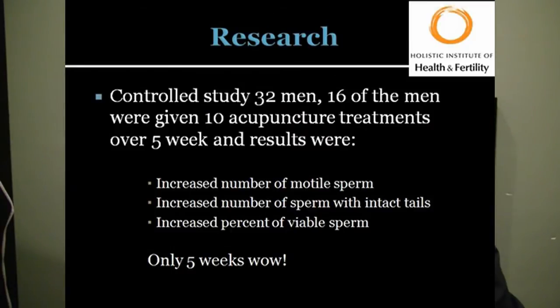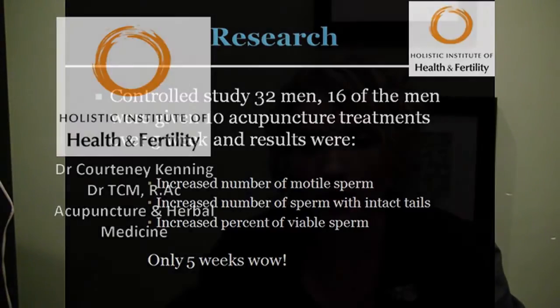There's lots and lots of research to support that Chinese medicine can help with male infertility. This is just one study among many. It was a controlled study with 32 men — sixteen of the men were given ten acupuncture treatments over five weeks. The results were an increased number of mobile sperm, an increased number of sperm with intact tails, and an increased percent of viable sperm. And that was only in five weeks, twice a week.